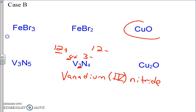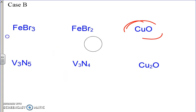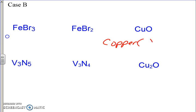Next we're going to do this copper problem — stop the video and give it a try. In this problem, we write the name of the metal — copper — put parentheses, and write the non-metal with an -IDE ending — oxide. Oxygen, element 8, has a two negative charge at the top of its column. There's only one oxygen, so copper must be two positive to balance it out. That makes this copper(II) oxide — CuO is copper(II) oxide.